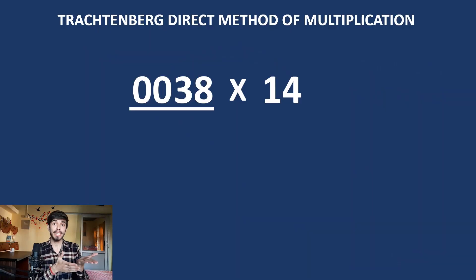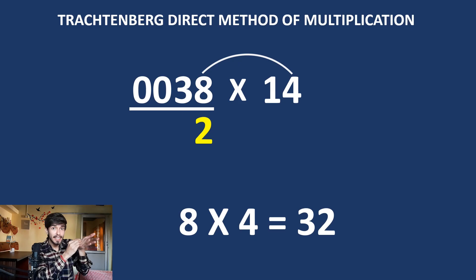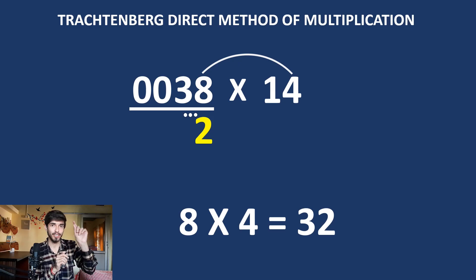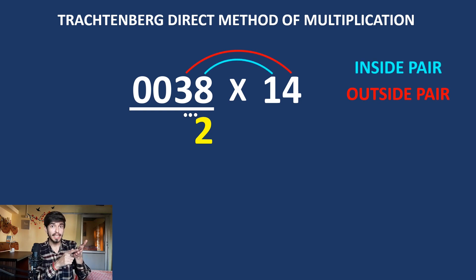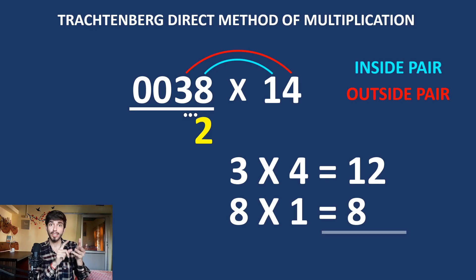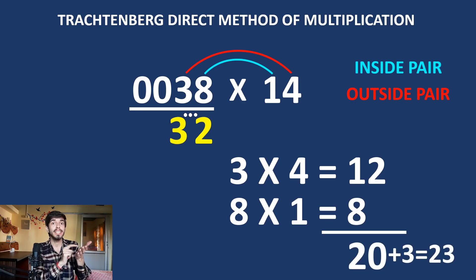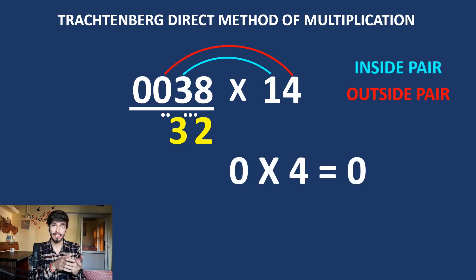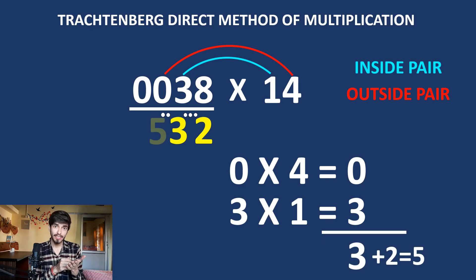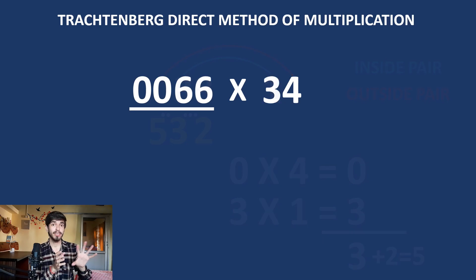Let's try 38 times 14. First: 8 times 4 is 32, so write 2 and three dots for a carry of three. Now outside pair and inside pair: 3 times 4 is 12, and 8 times 1 is 8, so 20 plus 3 carry equals 23 — write 3 and 2 dots. Shift the arch to zero: outside pair and inside pair — 0 times 4 is 0, and 3 times 1 is 3, plus 2 carry makes 5. Answer: 532.